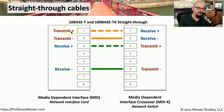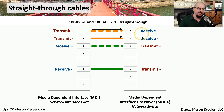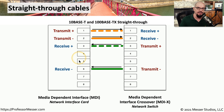This means that pin 1 transmit on one side is connected to pin 1 receive on the other side. If we look at the traffic flows across this 10 or 100 megabit ethernet cable, the network interface card would be transmitting to the receive pins and receiving traffic from the transmit pins on the other side.